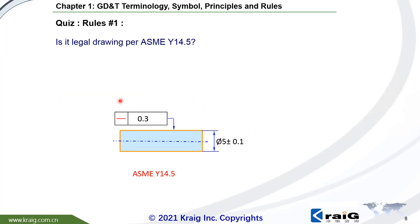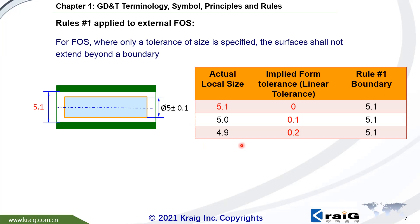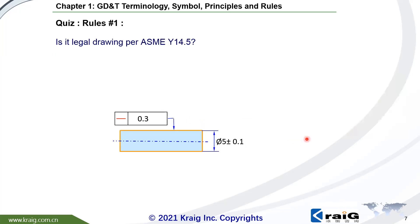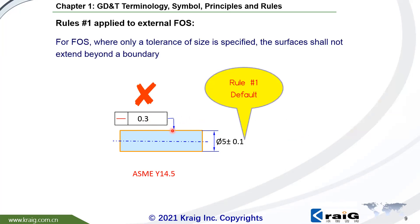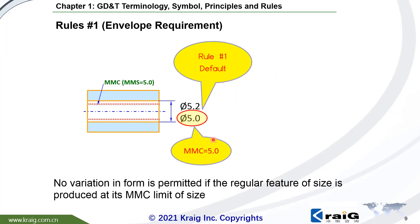If we want to put form tolerance directly on the part, this form tolerance should be smaller than size tolerance. As we know, the size tolerance is plus or minus 0.1, so the maximum form deviation is 0.2. For example, a straightness of 0.3 is not okay — this drawing is not correct, because there is a default Rule No. 1 here. You need to make this value smaller.